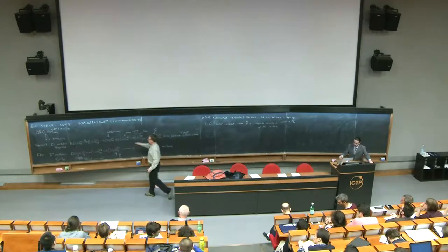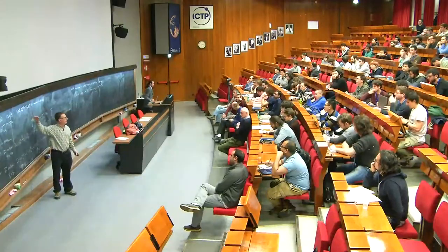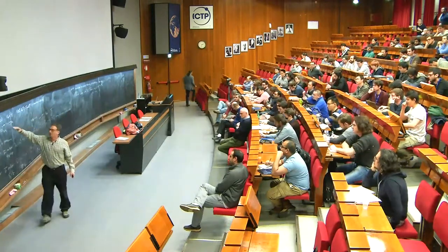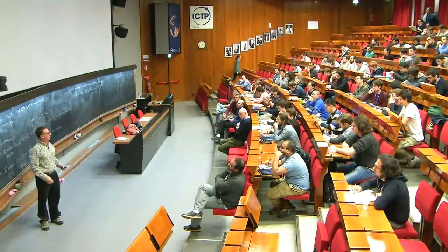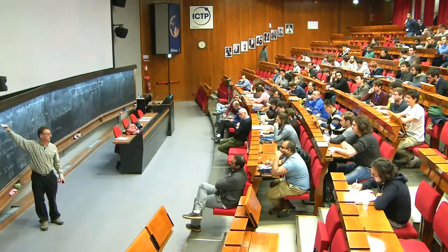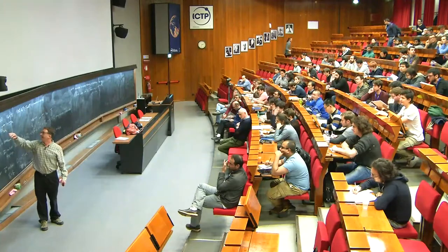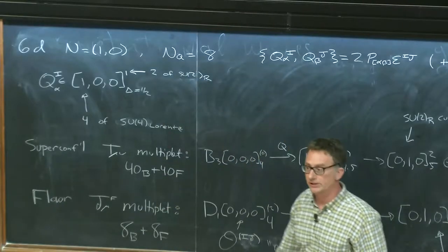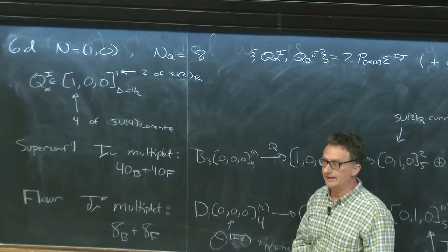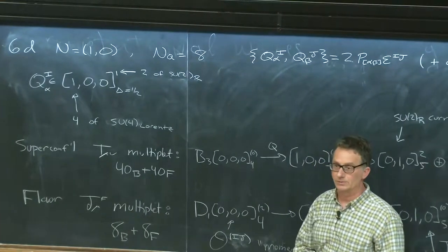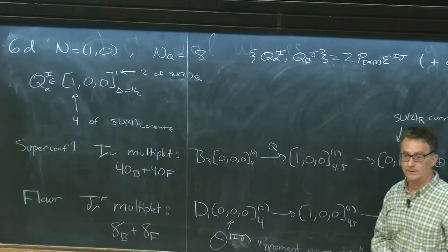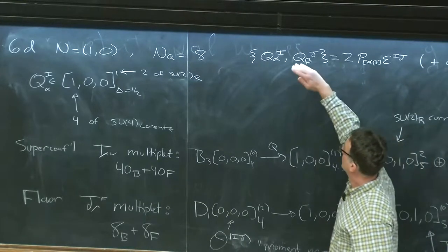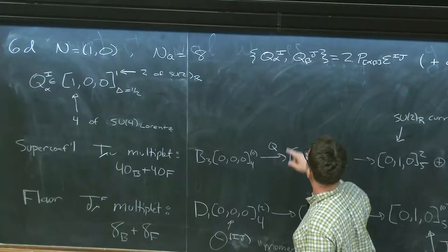These are some things I wanted to finish up from last time. Today I'll be discussing six-dimensional theories, starting with (1,0) supersymmetry. (1,0) supersymmetry has eight supercharges — the same number as 5D minimal supersymmetry, or 4D N=2, or 3D N=4.